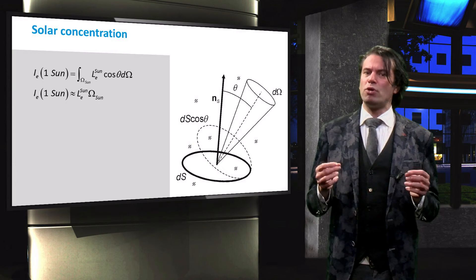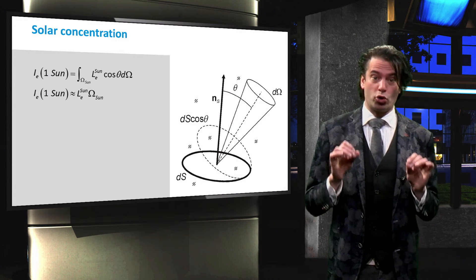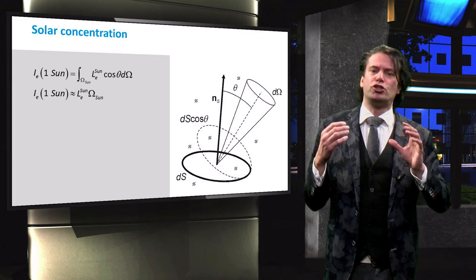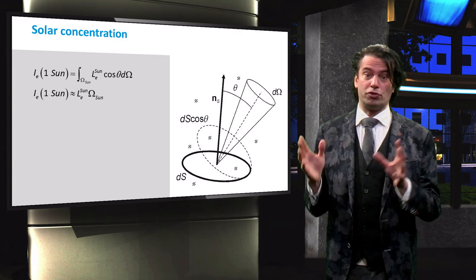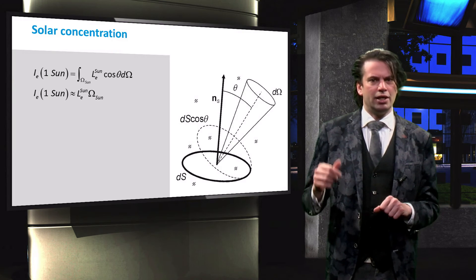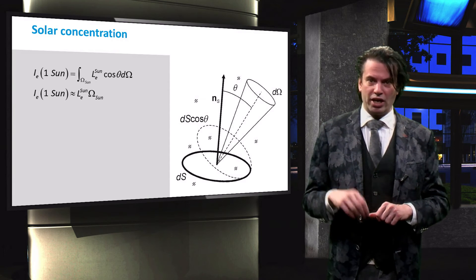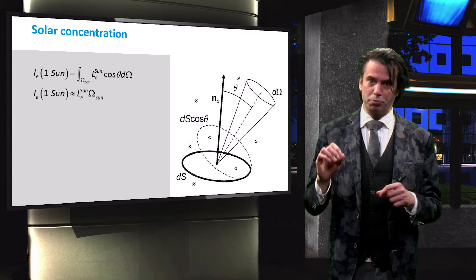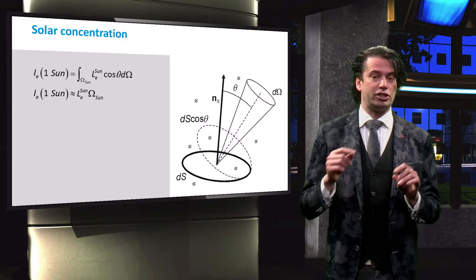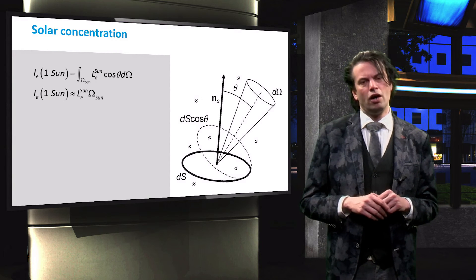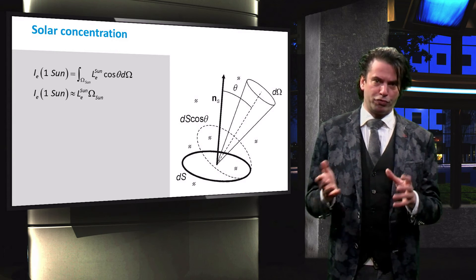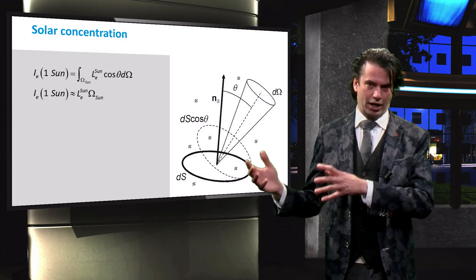We can estimate the maximal concentration of a solar concentrator system. For this estimation, we have to determine the irradiance received by the solar cell under no concentration. This is given by the shown equation, where L_sun is the irradiance from the sun and omega_sun is the solid angle of the sun as seen on earth. For normal incidence onto the solar cell, the equation simplifies to the product of the solar radiance and the solid angle.